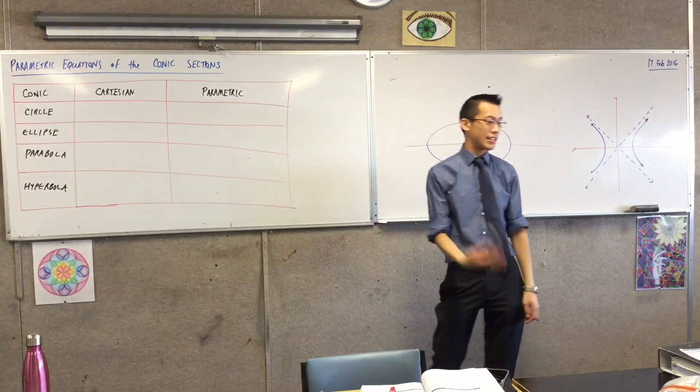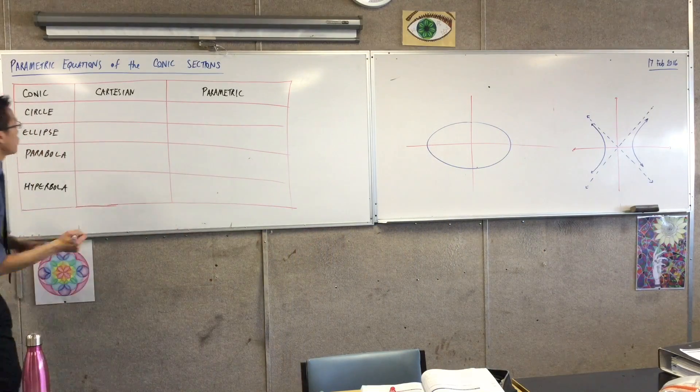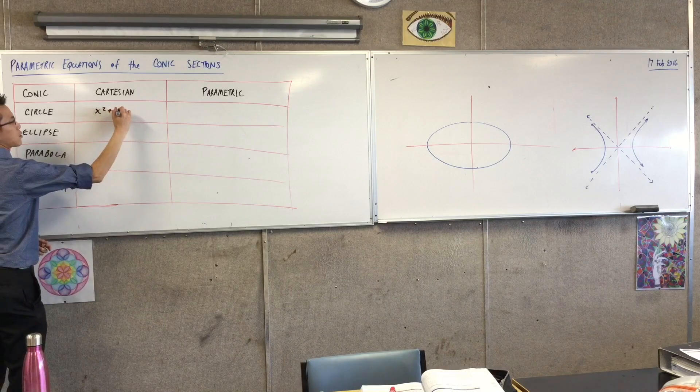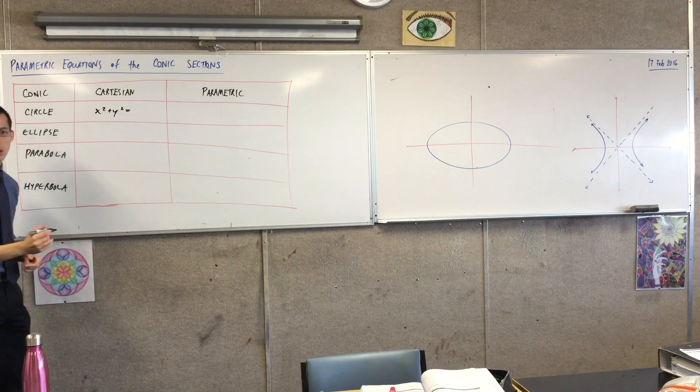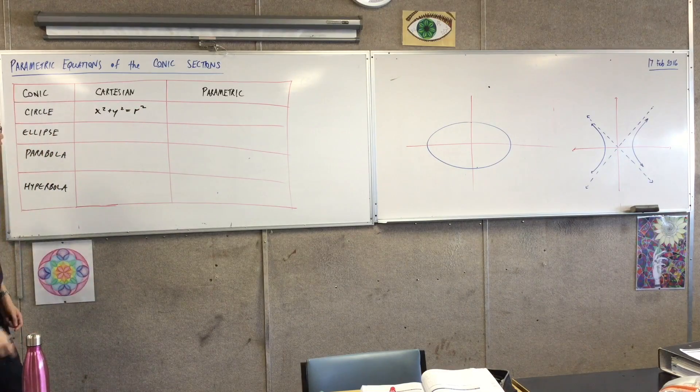So let's think about the Cartesian equations for all these, because we know all of these. We'll just do some standard forms. For instance here, we have x squared plus y squared equals r. Now we would usually say r squared, right? Because it's the radius.